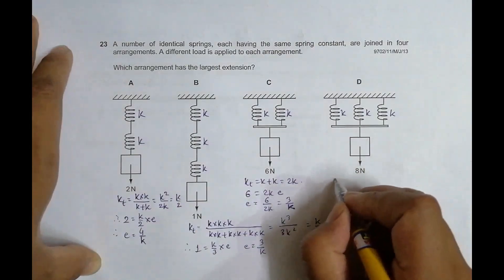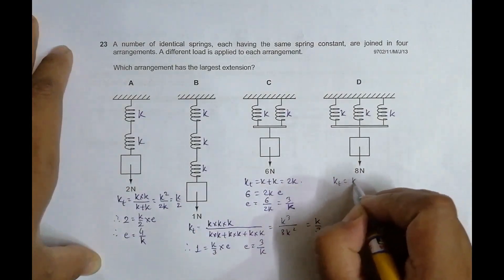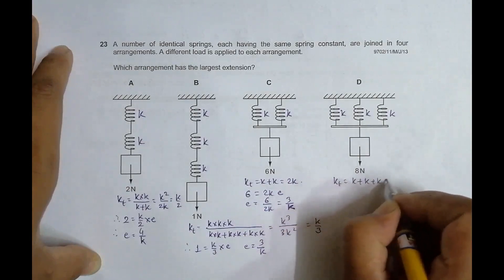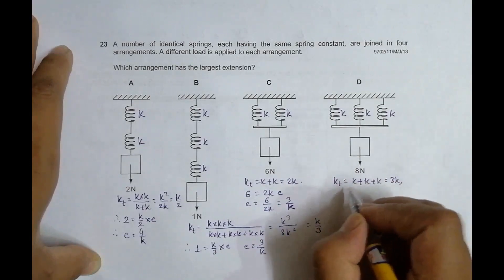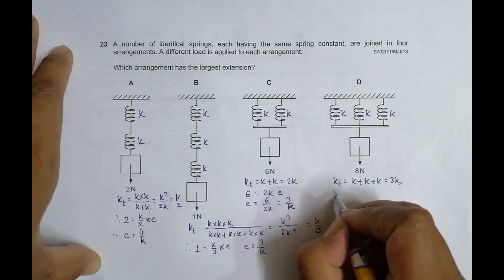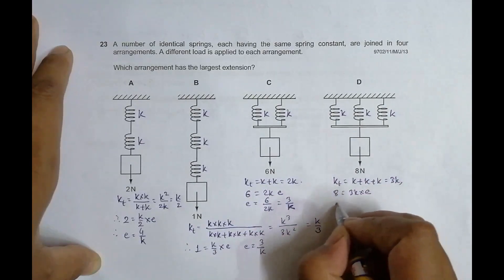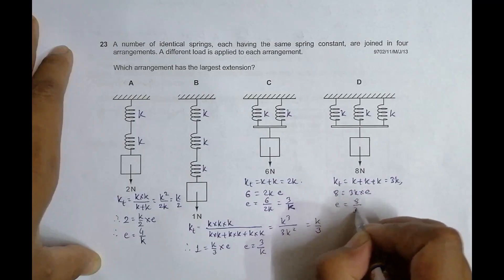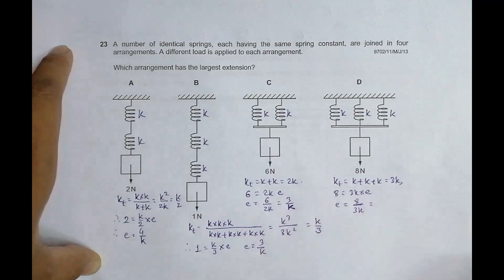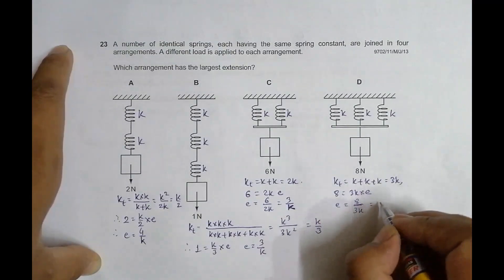For arrangement D, K total equals K plus K plus K equal to 3K. The force equation is 8 equals 3K into E, so E equals 8 by 3K. Using the calculator, 8 divided by 3 equals 2.67 by K.